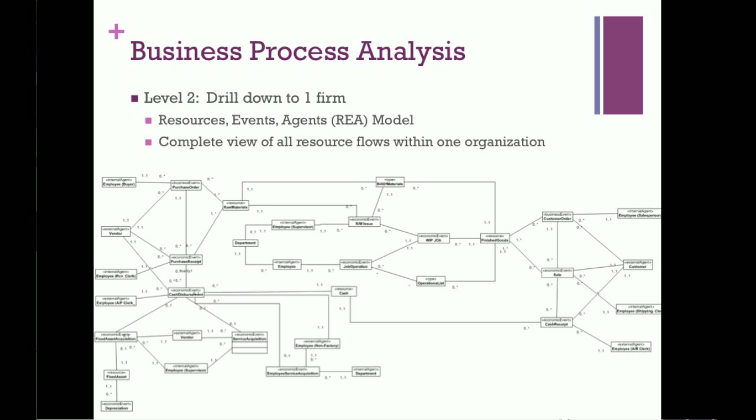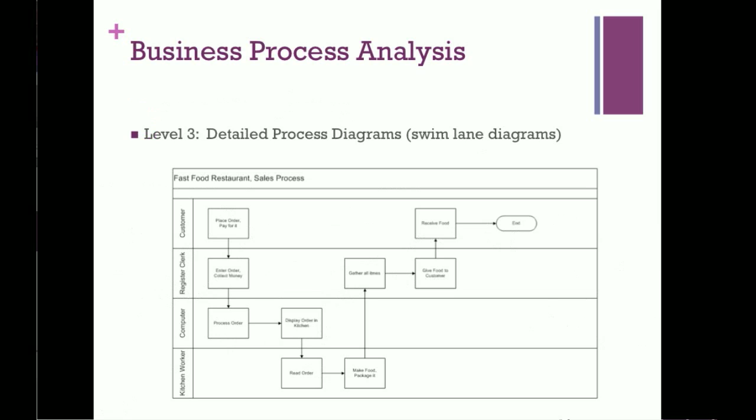We'd like to drill down into more detail and say, how exactly do we perform one of those economic events? And so, we'll use the level three diagramming technique, business process models or swimlane diagrams, to show the details of an individual transaction. So at the REA level, we'd have a sale, which is a decrease of inventory with an exchange of cash. Well, at this level, you can see that for a fast food restaurant, we have a number of different entities that participate in that sale. Each of the people or the computer is one swimlane, and we show the activities or the steps in the process in the swimlane diagram.